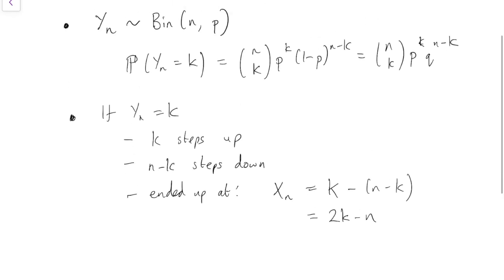So, putting these two facts together, we have the exact distribution, which is that the probability that Xn equals 2k minus n equals n choose k, binomial coefficient, p to the k, q to the n minus k.